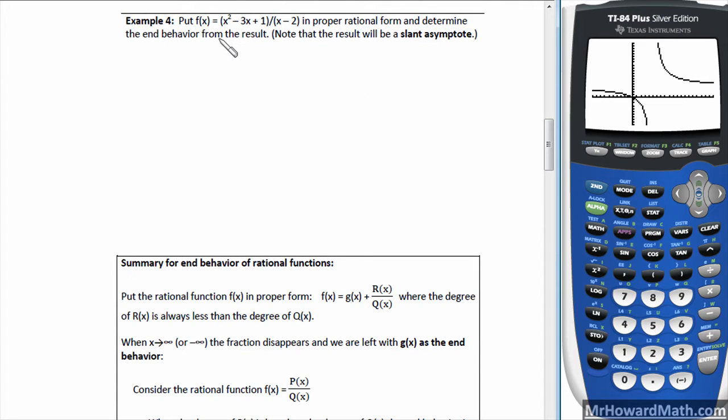Alright, now for example 4, it says put f(x) equals x squared minus 3x plus 1 over x minus 2 in proper rational form and determine the end behavior from the result.